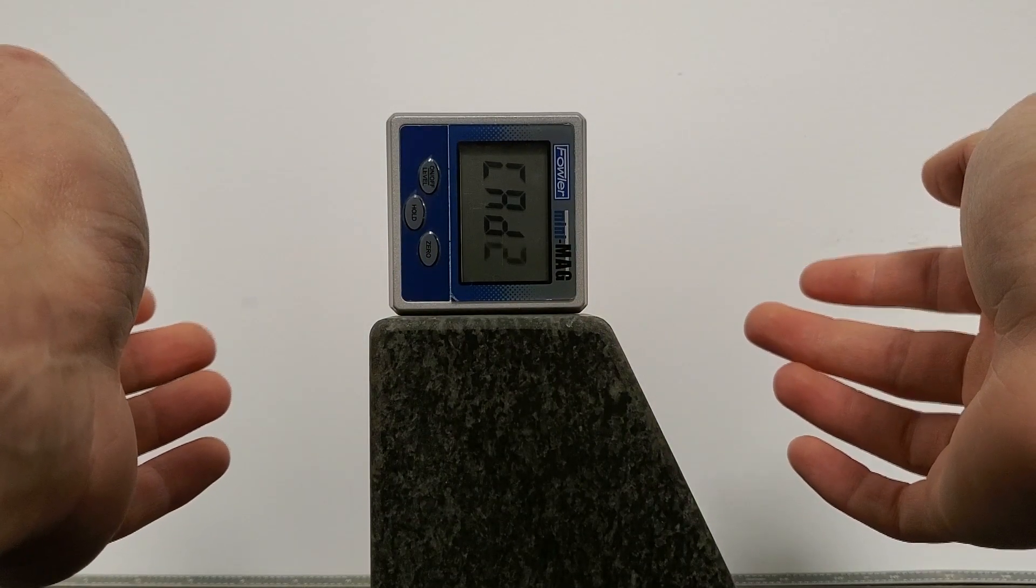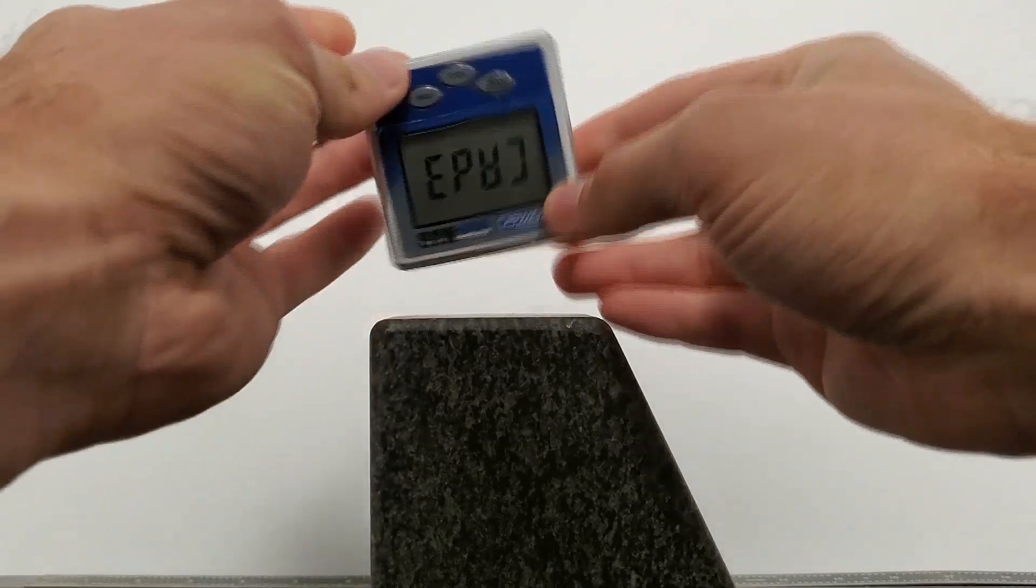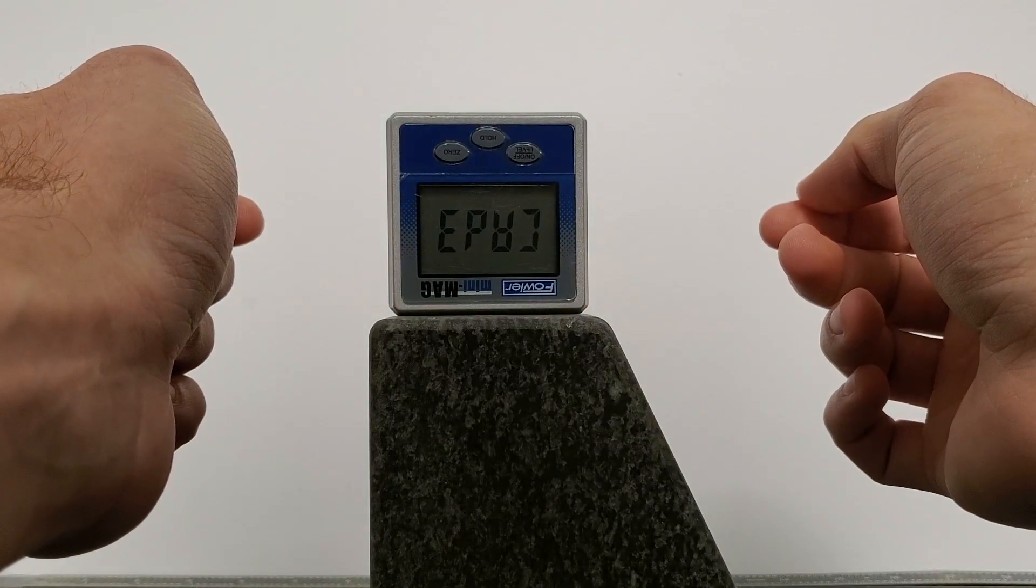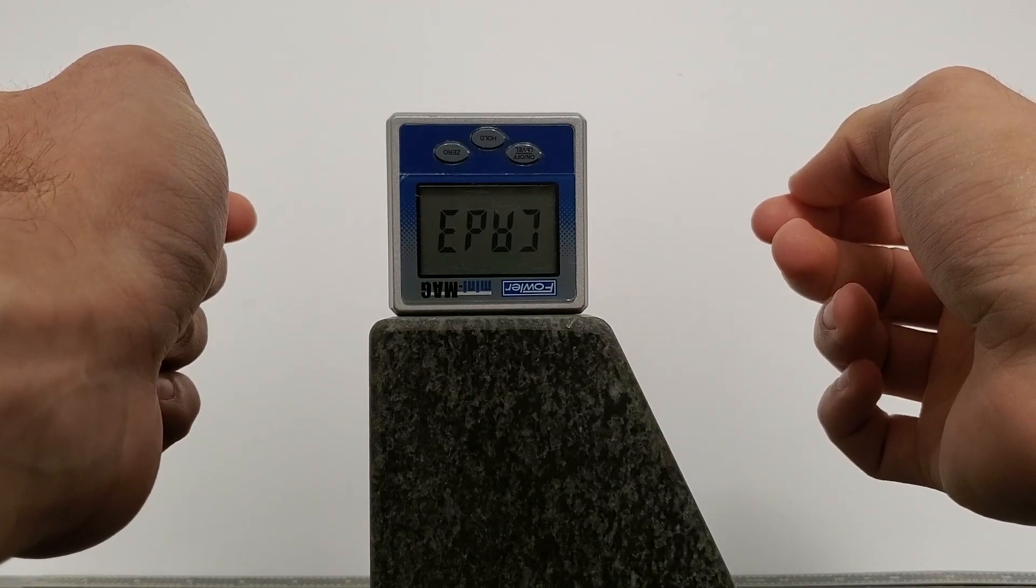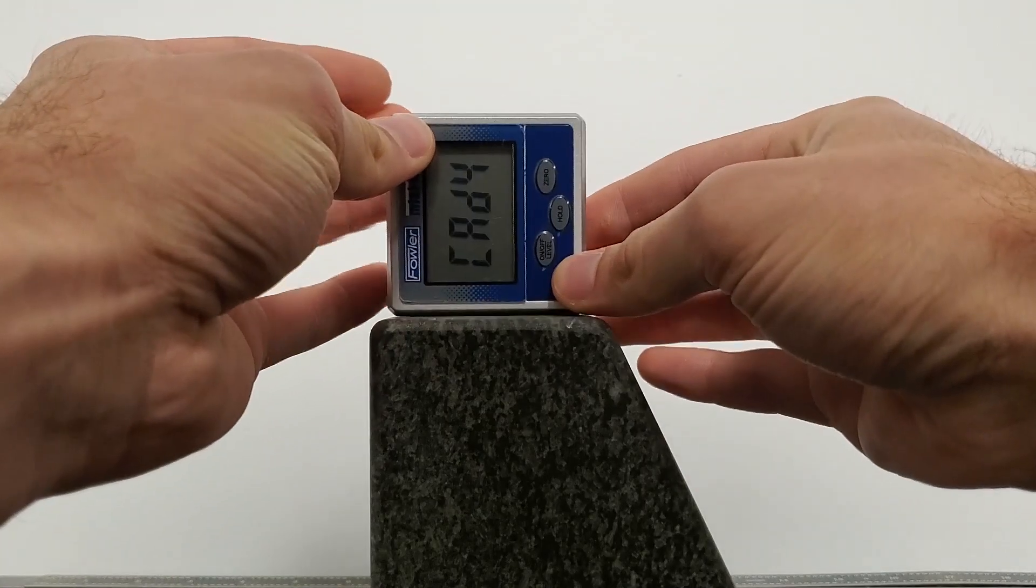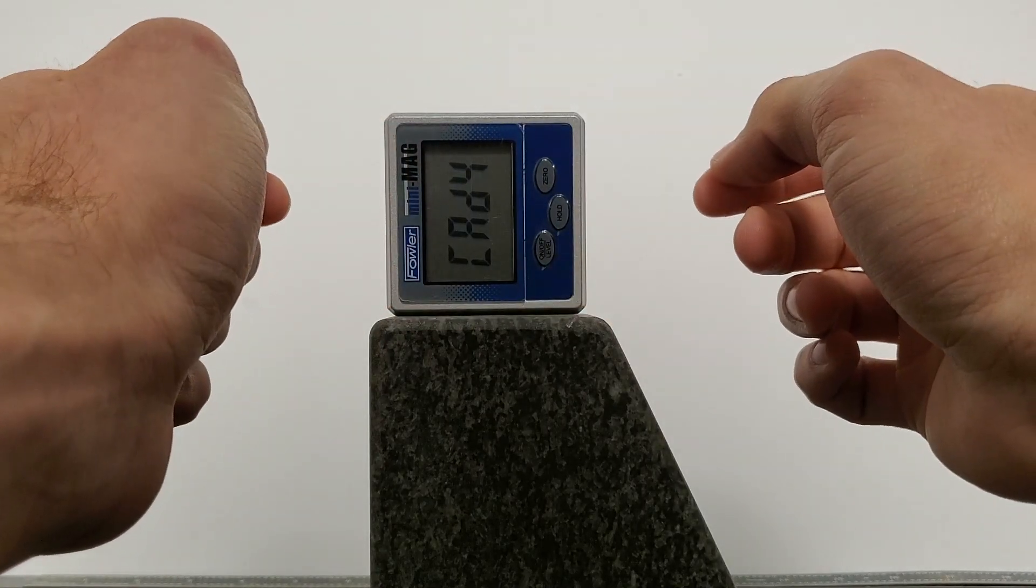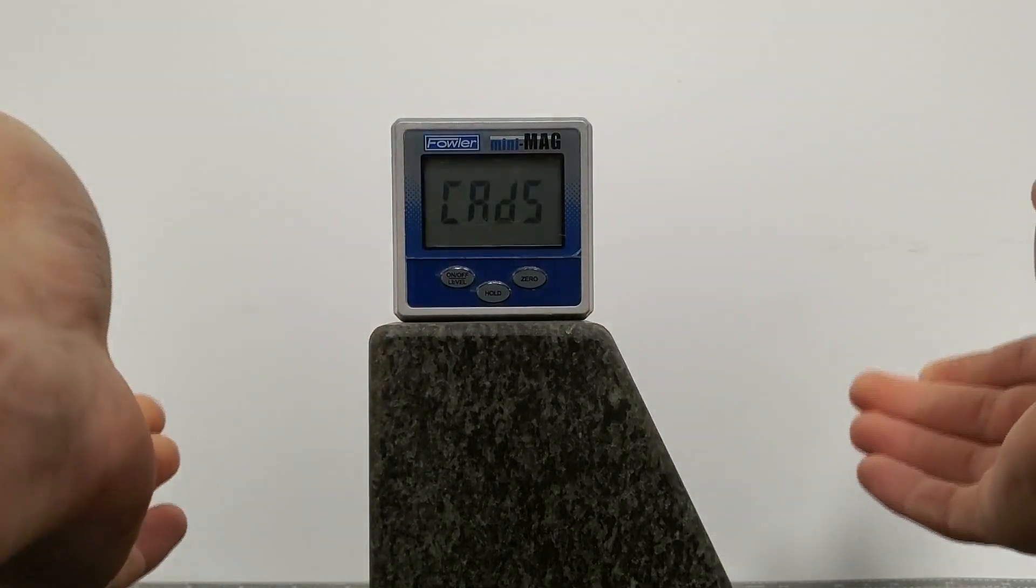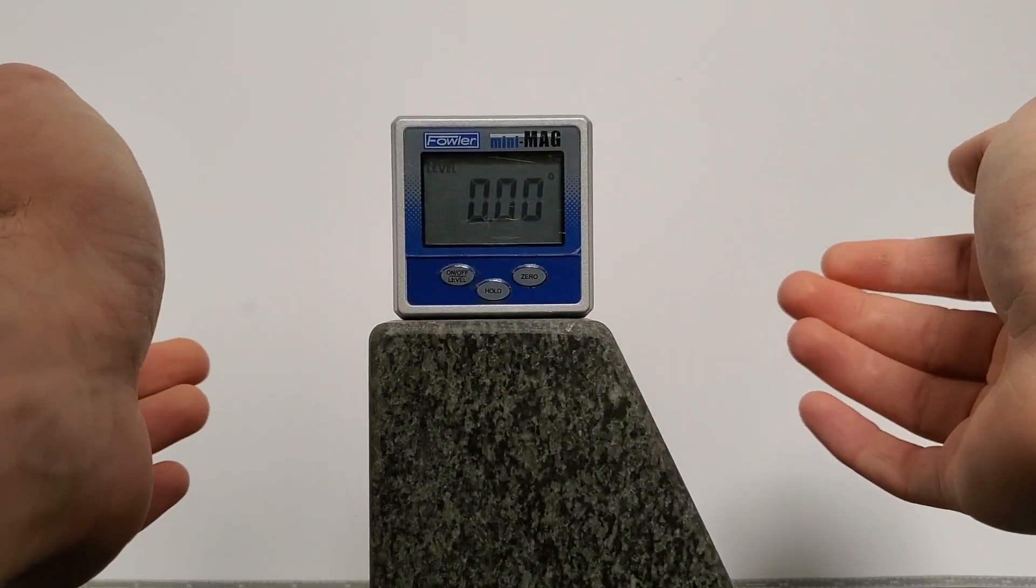The two will start blinking. Hit zero and flip it again. The three blinks, zero again. The four blinks, zero one last time, and then it should revert back to zero.